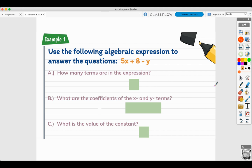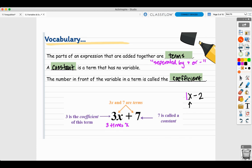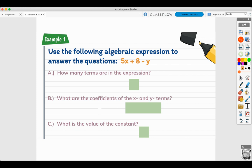Use the following algebraic expression to answer the questions. How many terms are in the expression? Remember, terms are separated by a plus or a minus. We have an addition here and subtraction here. So these are our terms. They're separated by a plus or a minus. So in this problem, we have three terms.